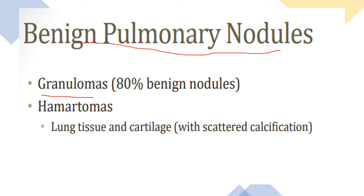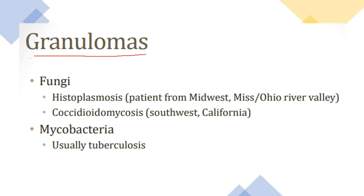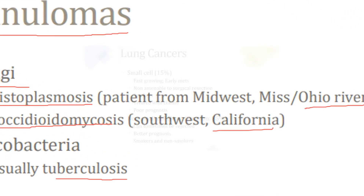Benign pulmonary nodules are commonly caused by granulomas in 80% of cases, such as tuberculosis. Another cause is hamartoma — mixed tissues found in the lung containing lung tissue mixed with cartilage and some calcification. Granulomatous nodules may also be caused by fungi like histoplasmosis found near the Mississippi or Ohio River, or coccidioidomycosis found in southeast California, as well as Mycobacterium tuberculosis.